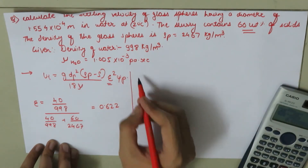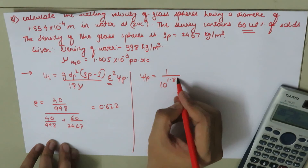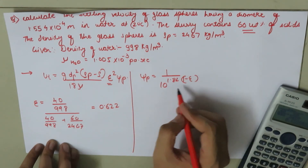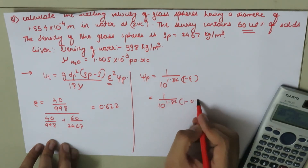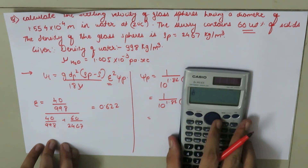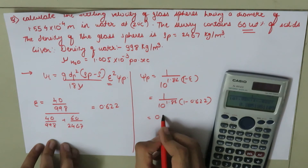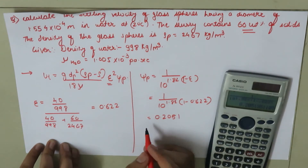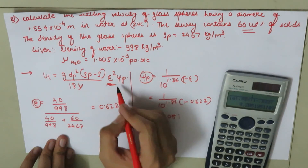The empirical correction factor psi_P = 1 / 10^(1.82 × (1 minus epsilon)) = 1 / 10^(1.82 × (1 minus 0.622)), which gives psi_P = 0.2051.